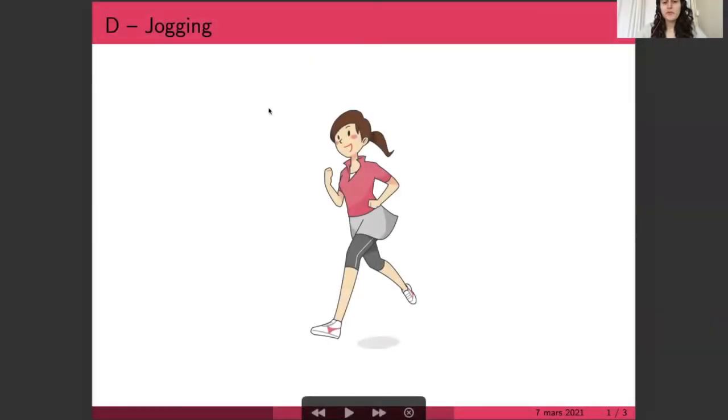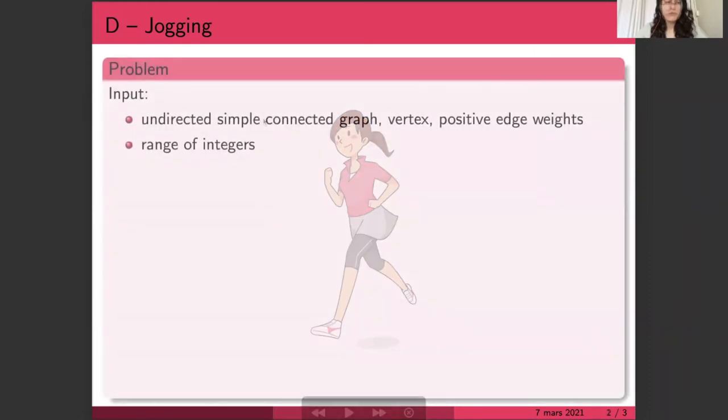In the problem jogging, we help Phoebe understand how many interesting runs she can do in her neighborhood. The first step is to phrase this as a graph problem.